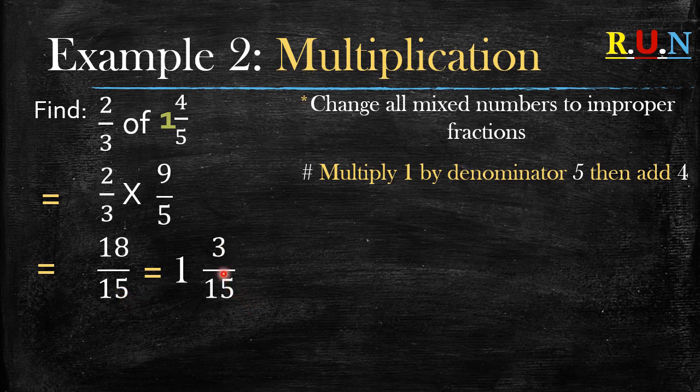But when you look at the 3 over 15, it's not in its simplest form. So you could write down the factors of three, then you write down the factors of 15, then you look for the highest common factor between the two. What's the highest common factor? It's three. So you divide both the numerator and the denominator by three. What do you get? You'll get one whole one over five, because when you say three divided by three it's one, 15 divided by three it's five.